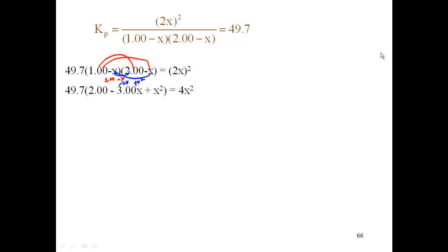And then I went ahead on the other side to 2X² and changed that to 4X². Now I have to multiply through by that 49.7 times 2, 49.7 times the negative 3X.